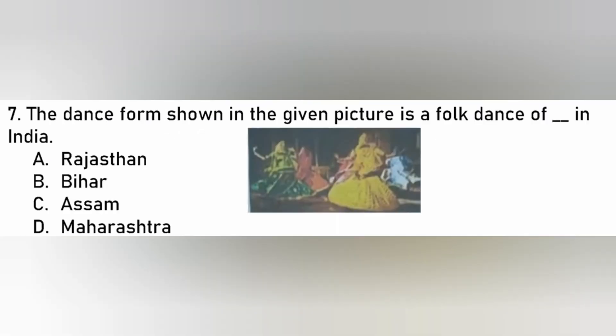The dance form shown in the given picture is the folk dance of which state in India? Rajasthan, Bihar, Assam, Maharashtra. The dance is Ghoomar. So the answer is A. Rajasthan.